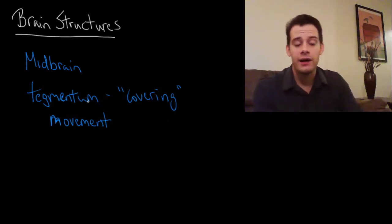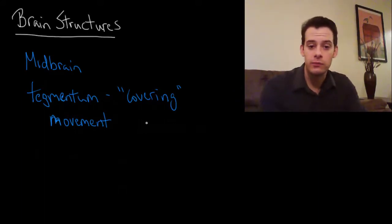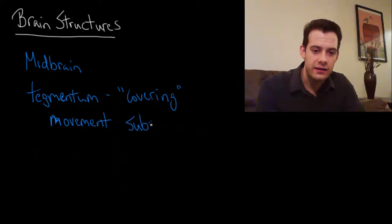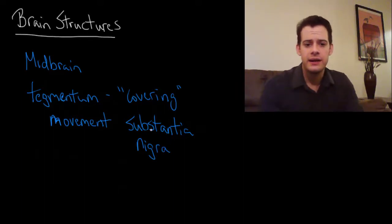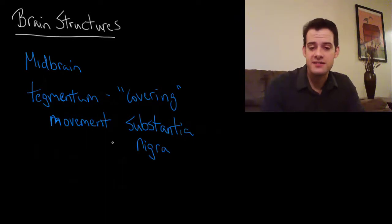And one area of the tegmentum that's involved in controlling movement is the substantia nigra and this is something that I talked about in a previous video. Because this area uses dopamine and one of the problems that we see in Parkinson's disease is deterioration of these dopamine producing neurons in the substantia nigra. And this results in the symptoms of shakes and tremors that we see in Parkinson's patients. So that's happening in this region of the tegmentum in the midbrain.